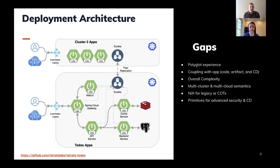These patterns also don't have robust semantics for multi-cluster or multi-cloud definitions — it gets complex quickly to express different discovery mechanisms depending on proximity. And lastly, for applications you can't rewrite or modify to include these libraries, they can't participate. Commercial off-the-shelf software certainly won't be able to run this way. That's where the importance of a transparent layer solving these concerns comes in — a transparent network layer — which is what service mesh brings to the table.